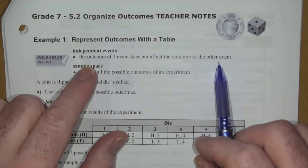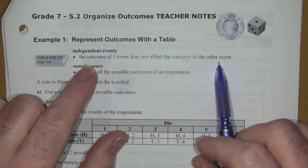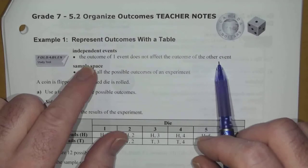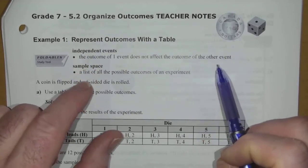So, if for instance, you're flipping a coin and you're rolling a die, flipping the coin has no impact on rolling the die, and rolling the die has no impact on flipping the coin. They're totally independent of each other.